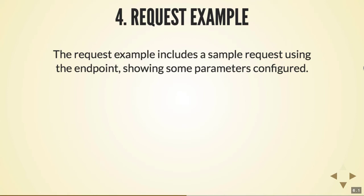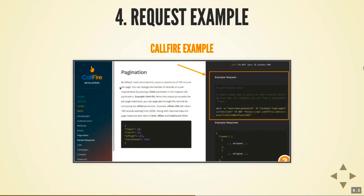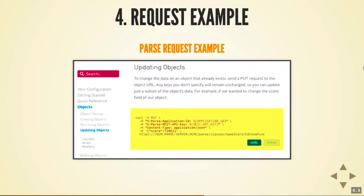The request example includes a sample request using the endpoint, showing some or ideally all of the parameters configured. Here's an example from Callfire — they put it on the right and show curl as the sample request. This is a design pattern where the code goes on the third pane and the conceptual stuff in the middle. Here's an example from Parse where they have an example request shown in curl with backslashes to make it readable — it takes two header parameters specified by -H and a data parameter.